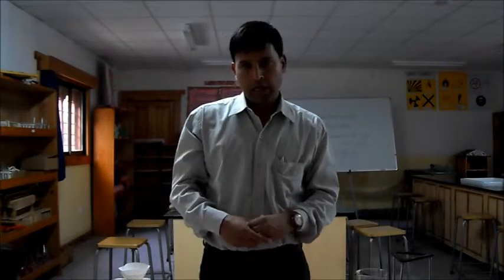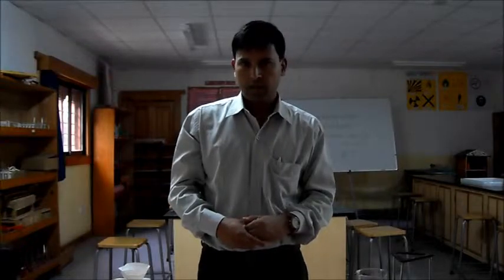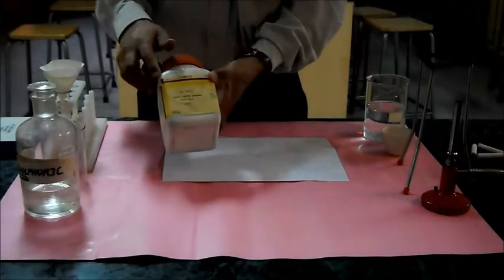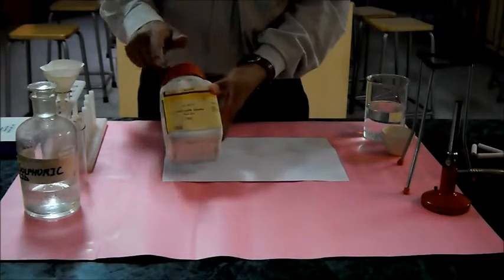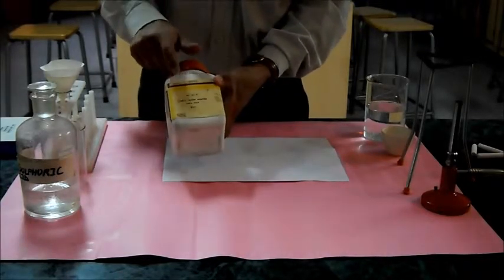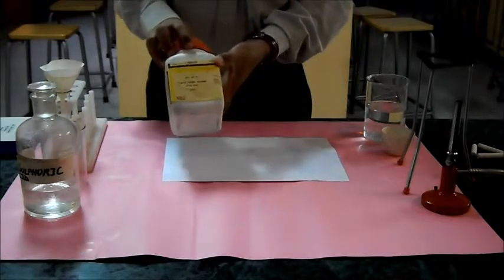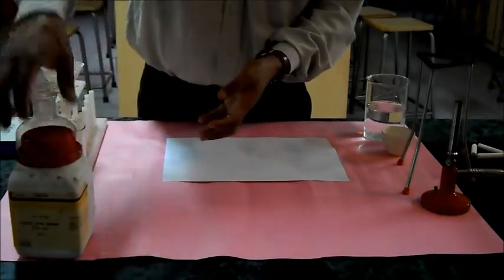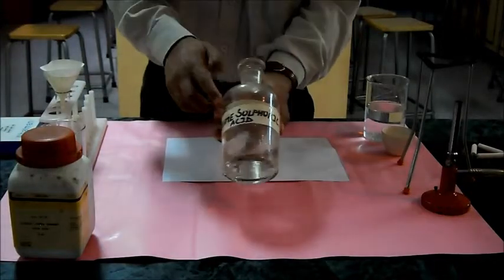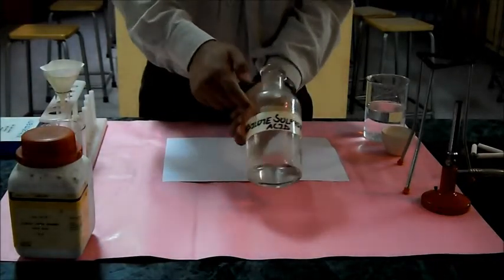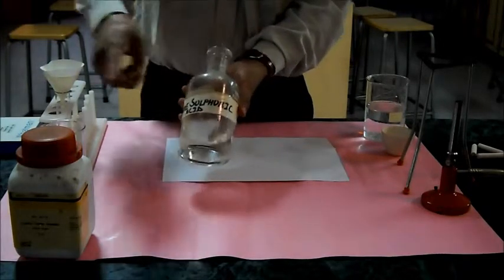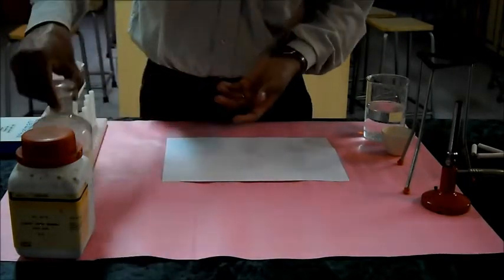We will be using acid and base. This is copper oxide which is a base but not alkaline, so this base is not soluble in water, but we will make it react with acid. For that I have got dilute sulfuric acid. This sulfuric acid would neutralize the base as copper oxide.